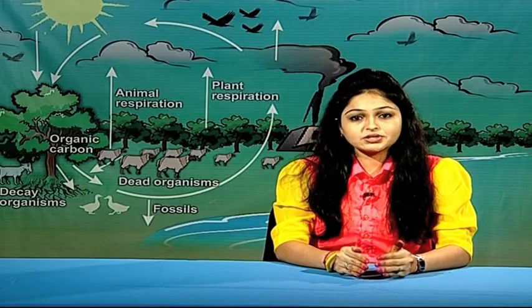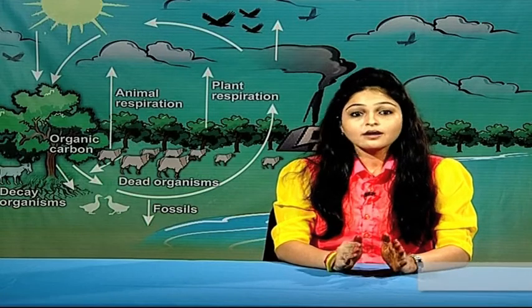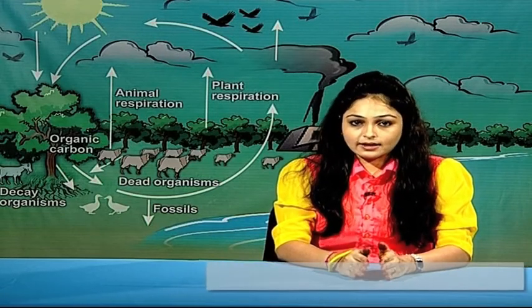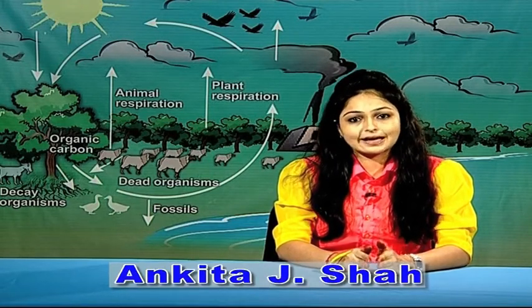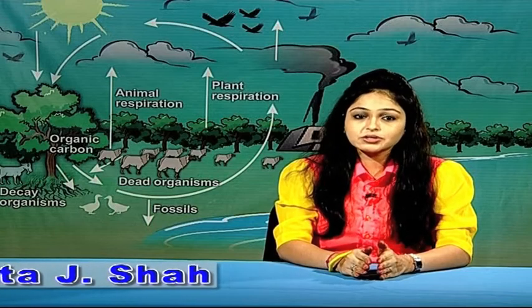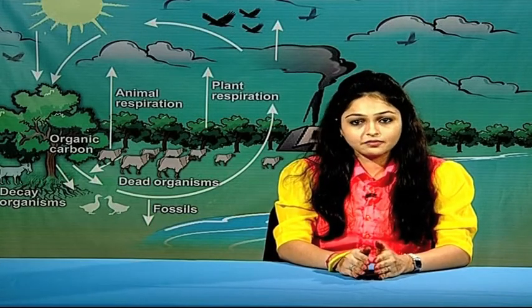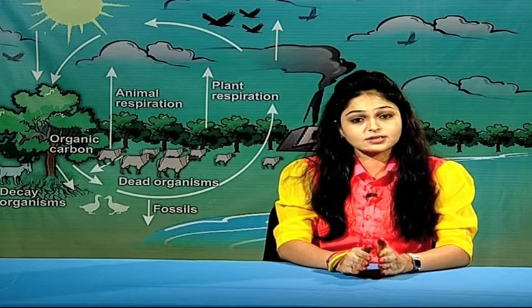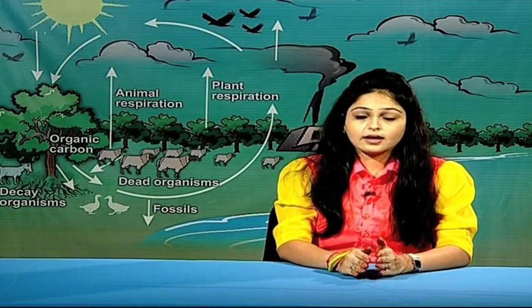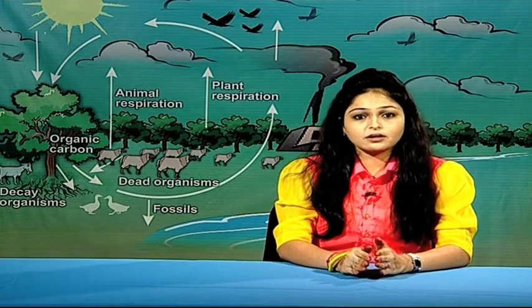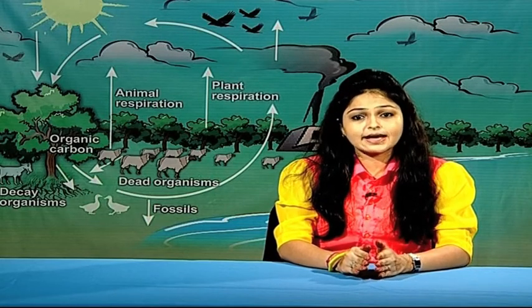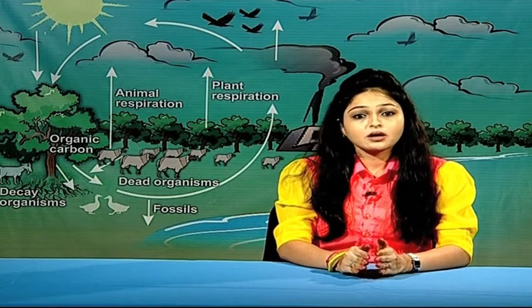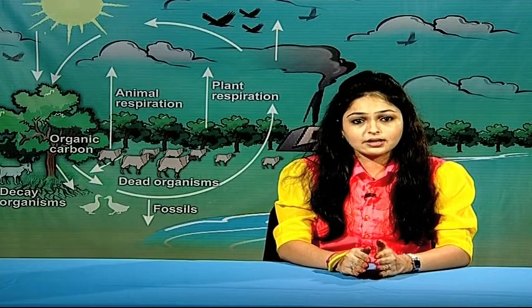Today, in this part of lecture, we will be studying biogeochemical cycles in detail. A biogeochemical cycle, or cycling of substances, is the cycling pathway by which chemical elements required by life move through both biotic (biosphere) and abiotic compartments — lithosphere, atmosphere and hydrosphere — of earth. A cycle is a series of changes which comes back to the starting point and which can be repeated.